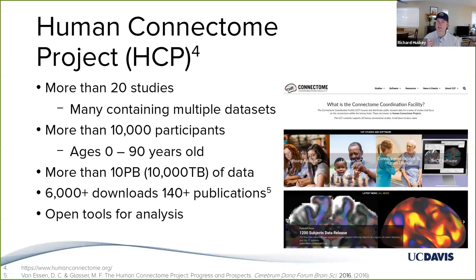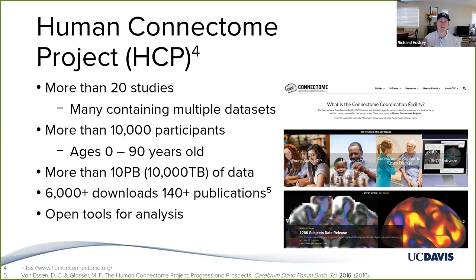This is a series of more than 20 research studies, each containing multiple data sets, comprised of participants ranging from newborns to adults over the age of 90 years old. It's generated a massive amount of data and many research publications as well. More than 6,000 downloads of the data sets were completed as of 2016, and there have been more than 140 publications — a number that has probably tripled or quadrupled since then. It also includes a number of open tools that assist researchers in data collection and analysis, which helps advance the speed and quality of science.